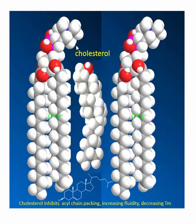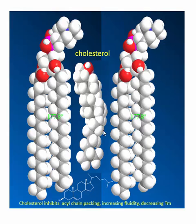Now let's look at a space-filling model. Here are two phospholipid molecules with a molecule of cholesterol interspersed between them. Cholesterol is itself amphiphilic with a slight bipolar head group from the OH group. At low temperatures, where these phospholipid chains would like to pack very well, cholesterol will help prevent packing because it acts as a contaminant. Hence, it would increase the fluidity of the membrane and effectively decrease the temperature at which the membrane would melt — in other words, the temperature at which it goes from the gel to the liquid crystalline phase.